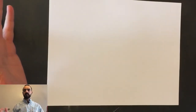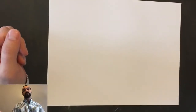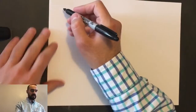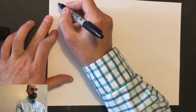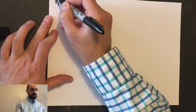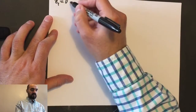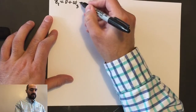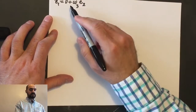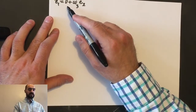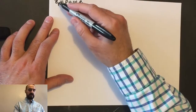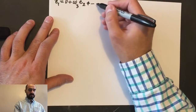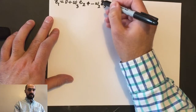Hello. The latest thing we talked about was how we differentiate, or how we compute the time rate of change of body-attached unit vectors. We said that e1_dot is equal to omega_3 * e2_hat. This term is zero because it indicates rotation about e1_hat, so e1_hat_dot is minus omega_2 * e3_hat.